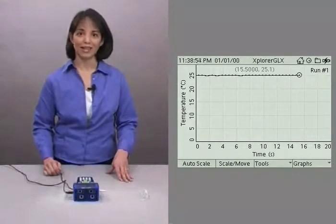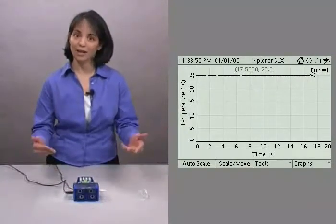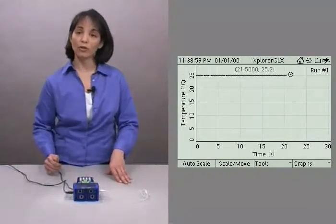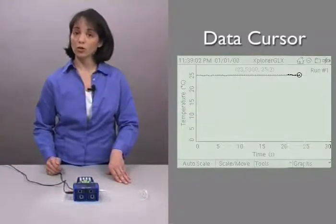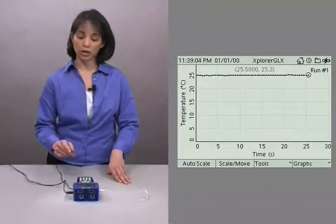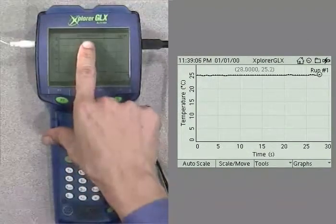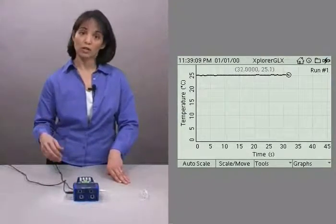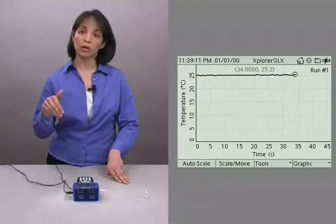Of course, the obvious indicator that we are collecting data is that data points are appearing on our graph. And you notice at the end of the data on that circle, that's your data cursor and its coordinate points are at the top of the GLX screen. It is currently set to be on the most recently recorded data point.